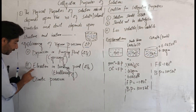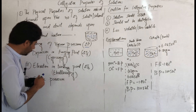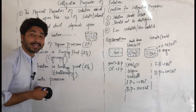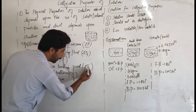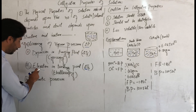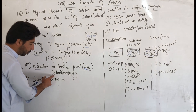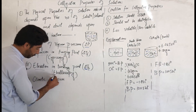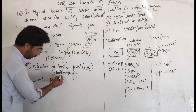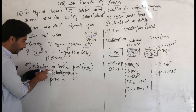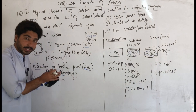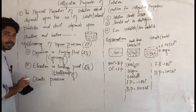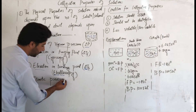Number three is elevation in boiling point. Elevation means increase — the boiling point of a solution increases when a solute is added. Pure water has a boiling point of 100 degrees centigrade. When a solute is mixed, the boiling point increases. This is called elevation in boiling point. The fourth colligative property is osmotic pressure.